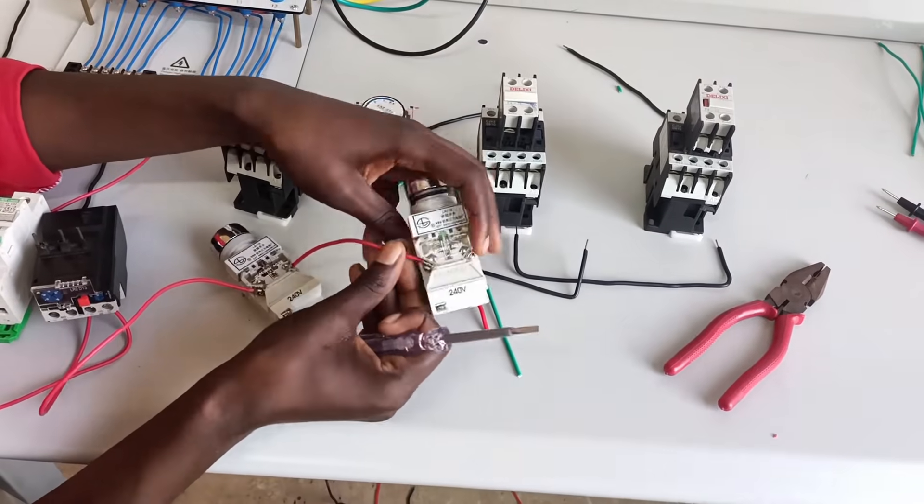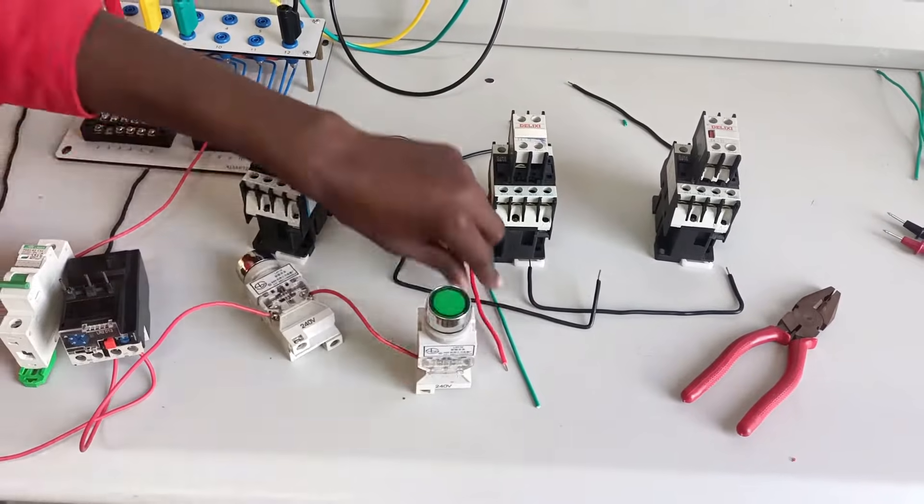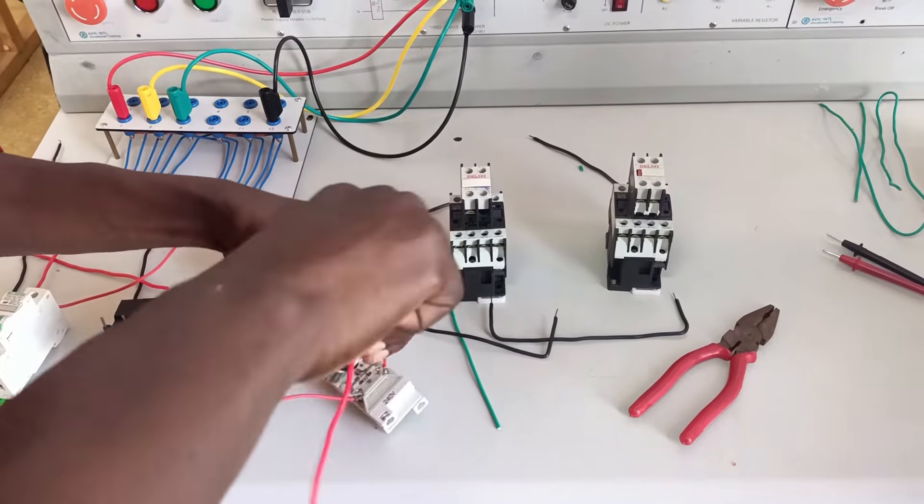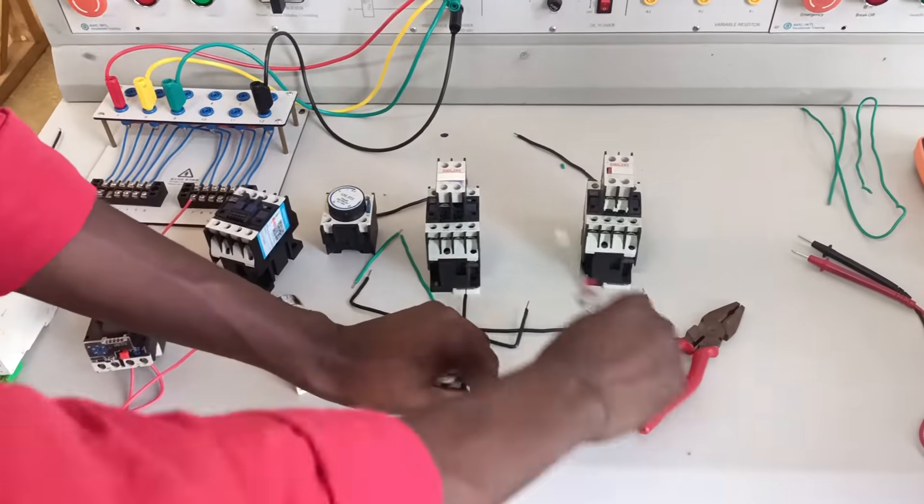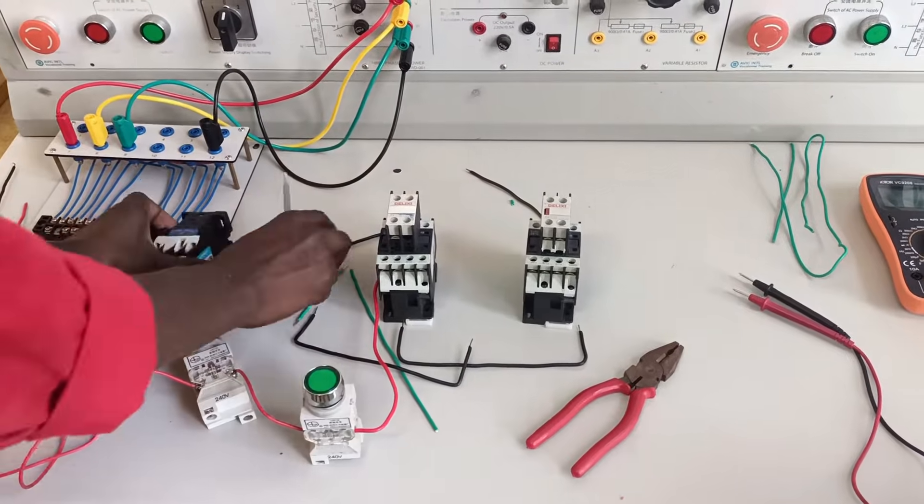For this case I'll terminate pin 3 of the NO push button loosely, but I'll need to terminate it again with another holding cable that will come from normally open terminals of the main contactor, that is pin 14.